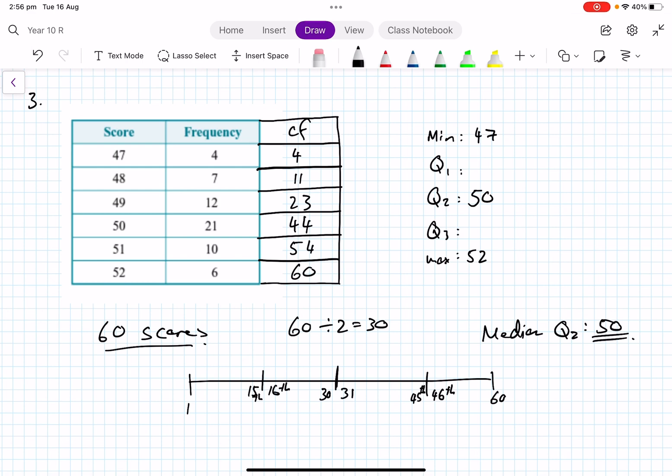So the first one, let's have a think again. The 15th and 16th, we've already done that. So the first four, it's 47. The next seven, up to the 11th. And then the 15th and 16th score are 49. They sit inside here. So our Q1 is 49. Then 45th and 46th, well, up to the 44th score is 50. Then the next 10, which is the 45th, the 46th, the 47th, are all 51. So my Q1 is 49, my Q3 is 51.